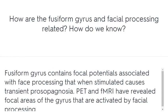How are the fusiform gyrus and facial processing related? The fusiform gyrus contains focal potentials associated with face processing that, when stimulated, cause transient prosopagnosia. PET and fMRI have revealed focal areas of the gyrus that are activated by facial processing.